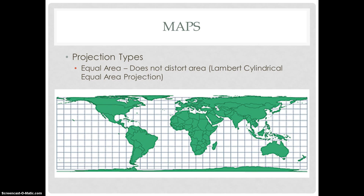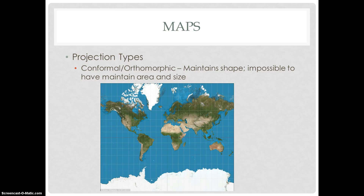There are four projection types. There are equal area maps, which do not distort area. One example is Lambert's cylindrical equal area projection. There is also the conformal or orthomorphic map projection, which maintains shape but distorts everything else. It is impossible to maintain the same area and size, so you cannot have the equal area and the conformal map together. The Mercator projection is a very popular example of this, but it's starting to go out of favor because people protest that it shows Europe and North America as more dominant than other countries.